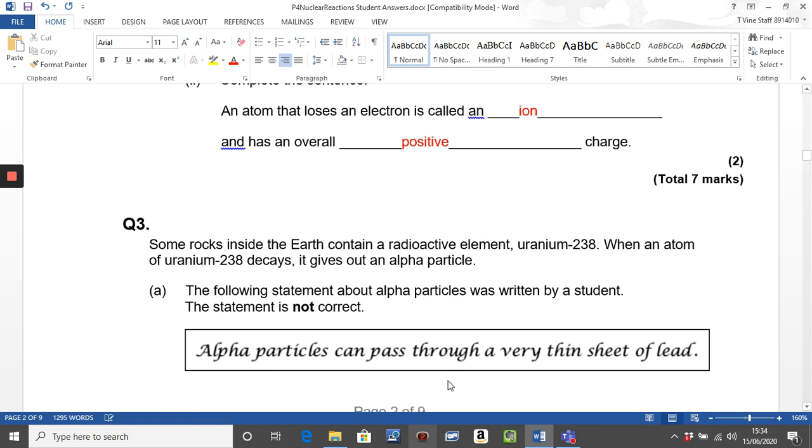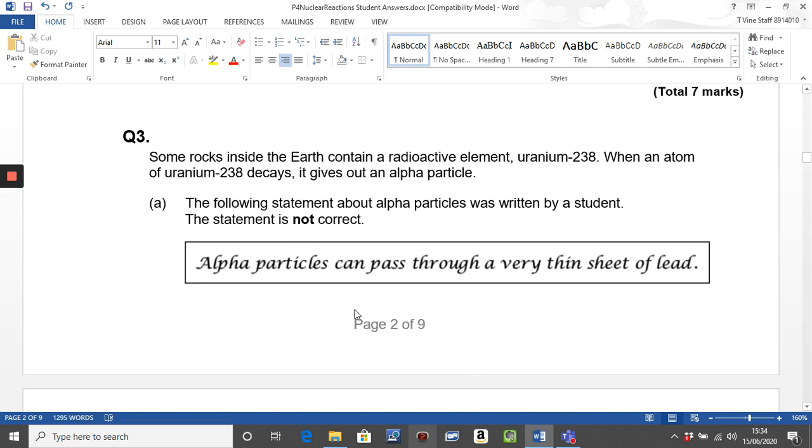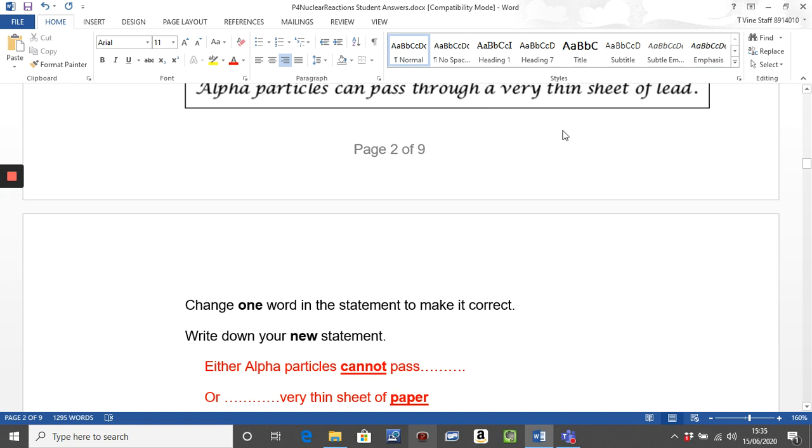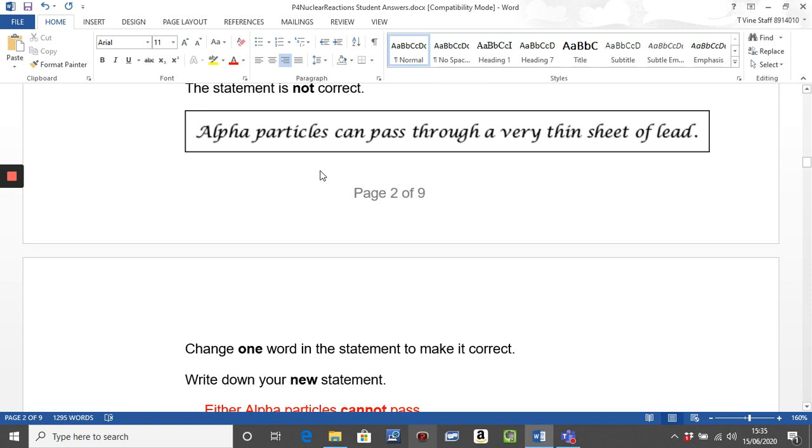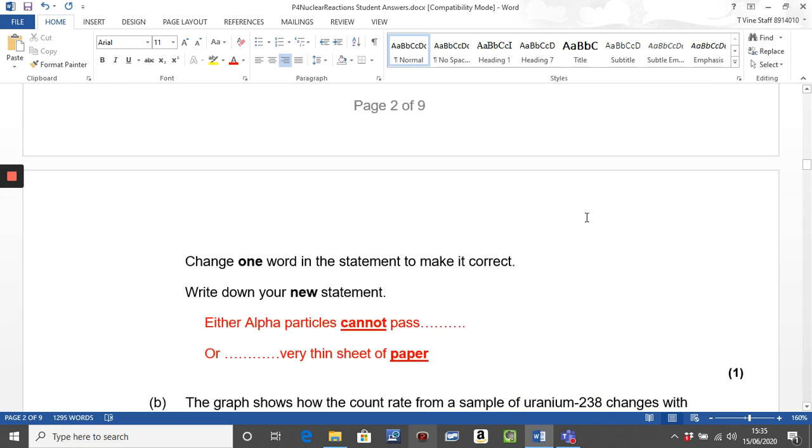Question three. Quite a few of you didn't quite understand what this question was asking you. So we've got a statement about alpha particles that's incorrect and you had to change it. Two possible answers, both equally correct. Alpha particles cannot pass through a very thin sheet of lead, or if you wanted the first part of that sentence to be correct, then the very last word on that sentence needed to be changed to paper. So alpha particles cannot pass through a thin, very thin sheet of lead, or alpha particles can pass through a very thin sheet of paper. So read your question, read your answer, make sure you've got the right thing.